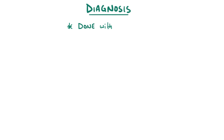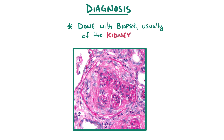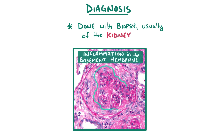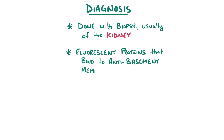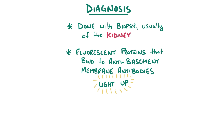The best way to diagnose Goodpasture syndrome is by doing a biopsy, usually in the kidney, because that's the best studied organ in this disease. Under a microscope, you'll usually see inflammation of the basement membrane, and if fluorescent proteins that bind to the anti-basement membrane antibodies are used, they light up in a linear pattern along the basement membrane.